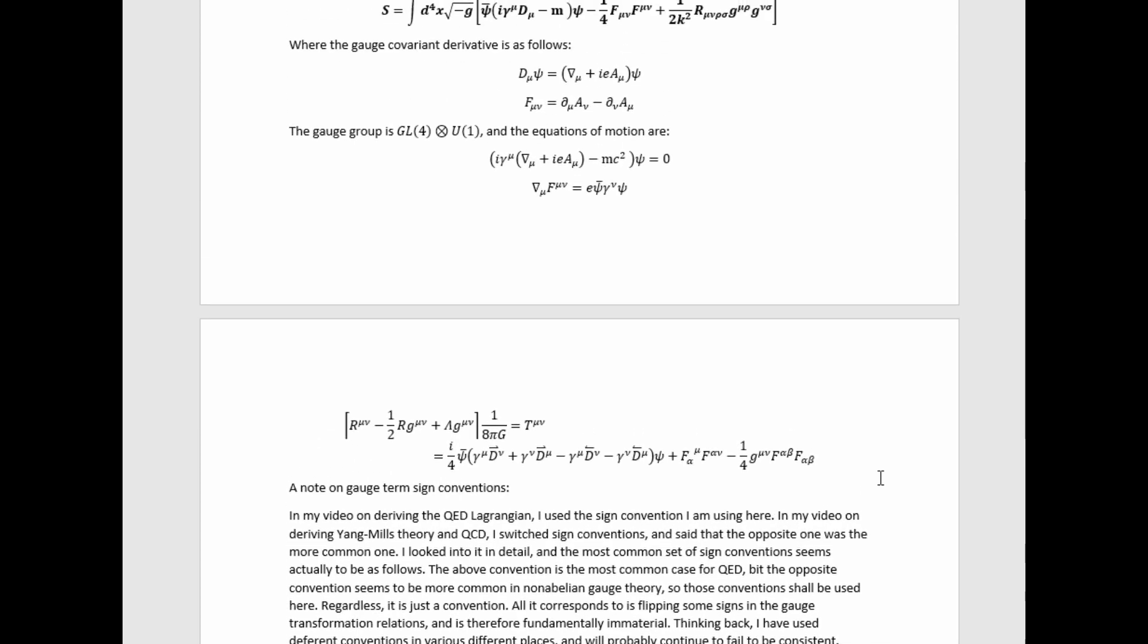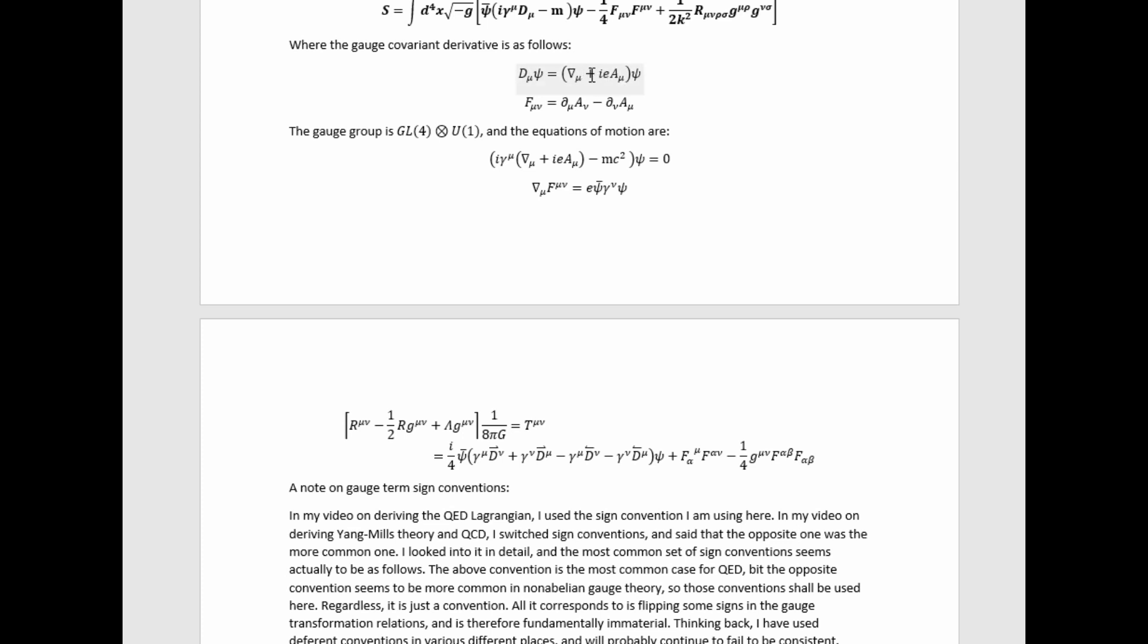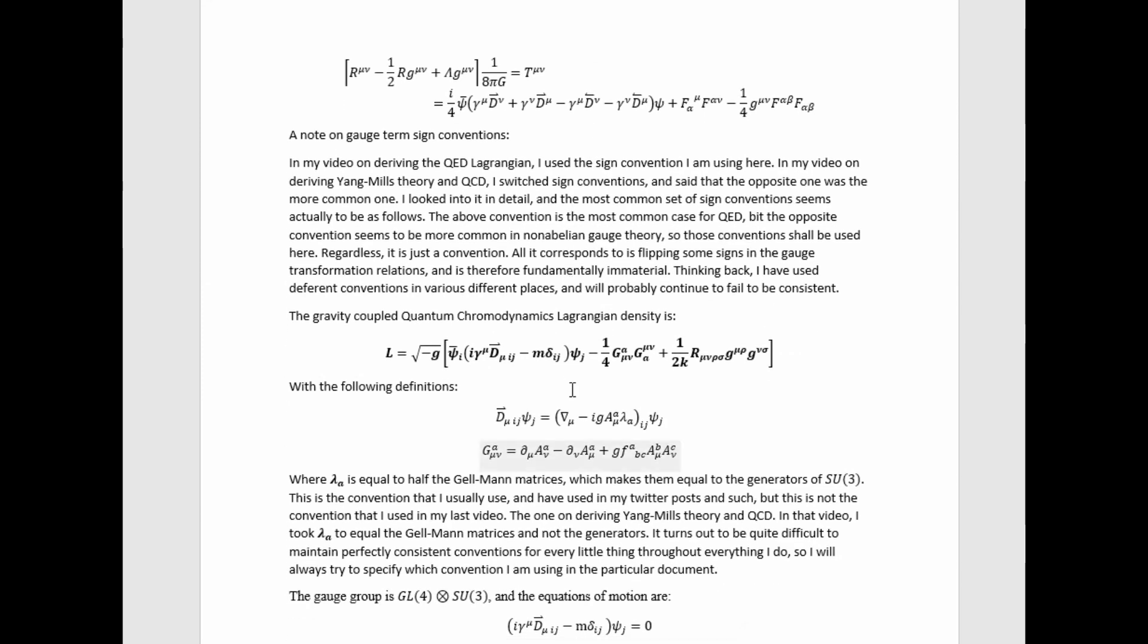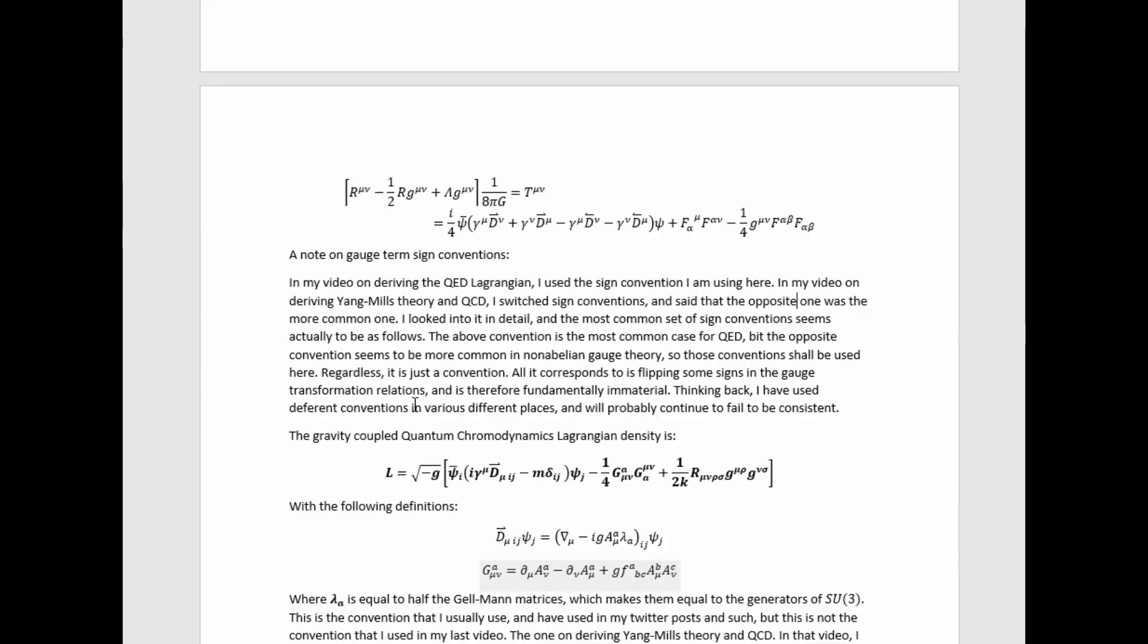So the sign convention I'm talking about, if it's not clear, is what sign you put on the gauge term in these gauge covariant derivatives here for the isospin gauge symmetries. So a plus or a minus for that sign right there, and then also this one here. So now moving on.